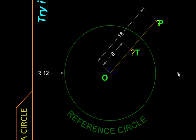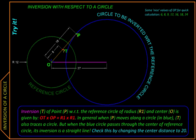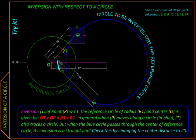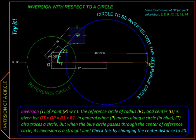But we can also invert curves - say a path followed by point P to a path followed by its image point T. So let us give this point P a circular path and we will observe what kind of path is followed by point T. So as P moves along a circle, T also moves along a circle, and another thing to notice is when P is outside, T is inside and vice versa.